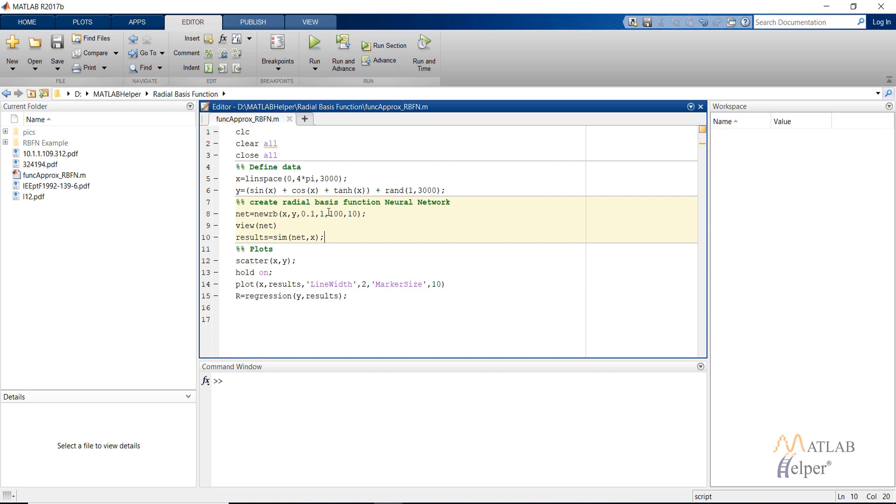Then we select our maximum number of neurons that we need, and then this is the number of neurons after which the results will be shown on the command window. After that we view the network and simulate the network with the inputs to get the results.